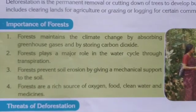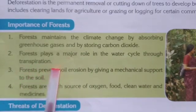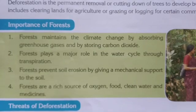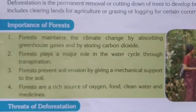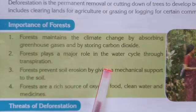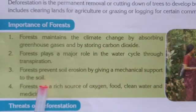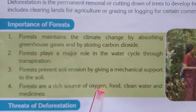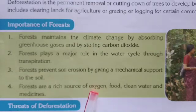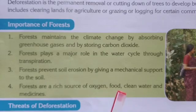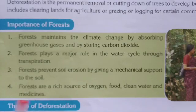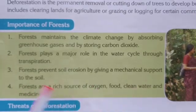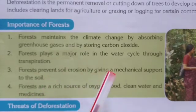Forests play a major role in the water cycle through transpiration. Transpiration is a process in which green leaves release water in the form of vapor. Forests also prevent soil erosion by giving mechanical support to the soil, and are a rich source of oxygen, food, clean water, and medicine.